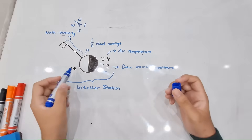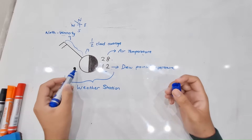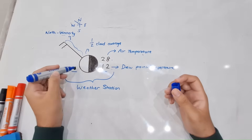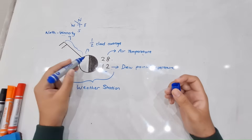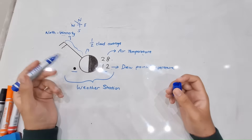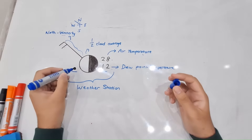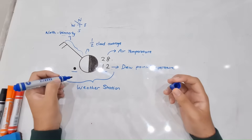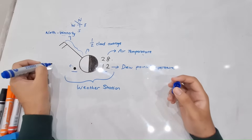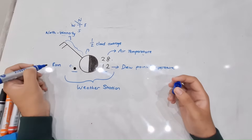Next let's look at this small symbol here — we can see it is just a dot. This symbol next to the bigger circle gives you the precipitation. A simple dot will represent rain, just normal rain.